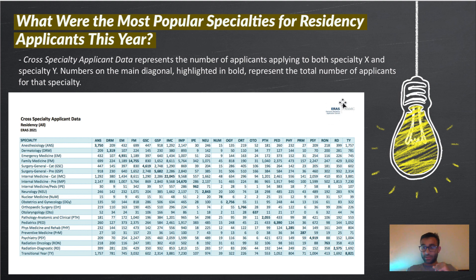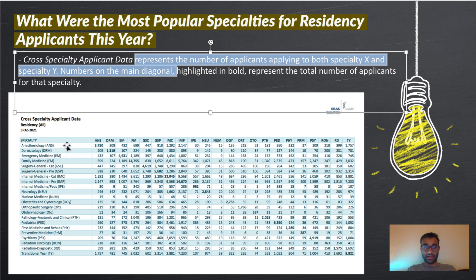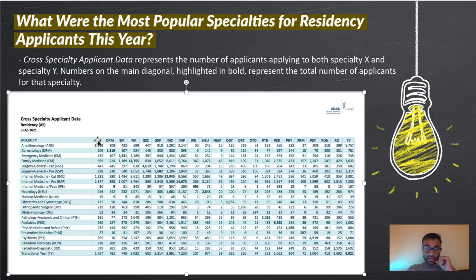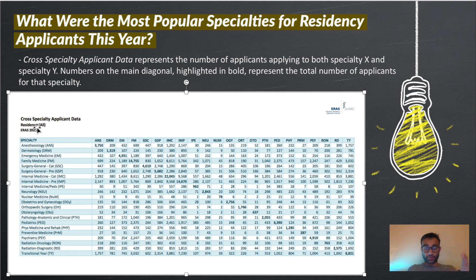This data was released by ERAS and the AAMC, the American Association of Medical Colleges. The cross-specialty applicant data represents the number of applicants applying to both specialty X and specialty Y. Numbers on the main diagonal, highlighted in bold, represent the total number of applicants for that specialty. This is across all individuals, including IMGs — international medical graduates — and non-IMGs.